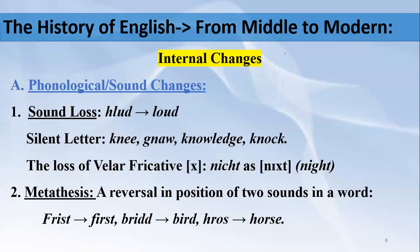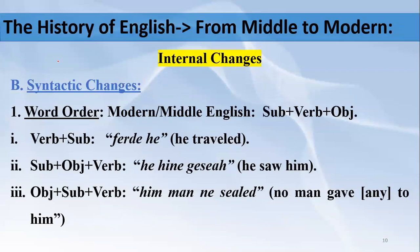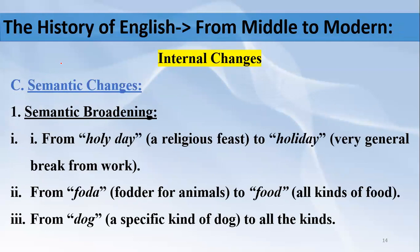Internal changes means linguistic changes — changes in the sounds and pronunciation of English, changes in the syntactic and grammatical structures, and changes in the semantic structures, like changes in the meaning of words. We are going to discuss three types of internal changes: first, phonological changes (changes in pronunciation); second, syntactic changes (changes in grammatical structures); third, semantic changes (changes in the meaning of words).